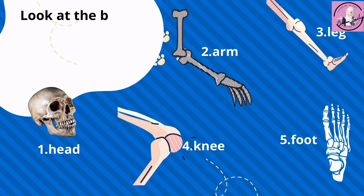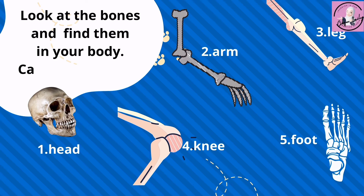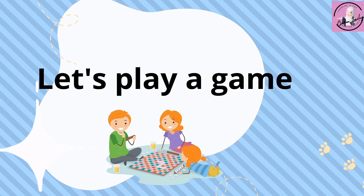Look at the bones and find them in your body. Can you feel them? Let's try. Number one: head. Number two: arm. Number three: leg. Number four: knee. Number five: foot. Can you feel and touch them? Good job! Now are you ready to play a game? Let's go!